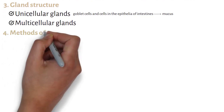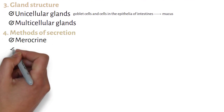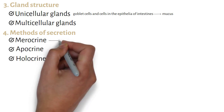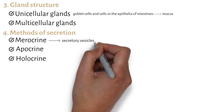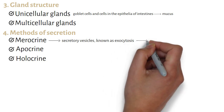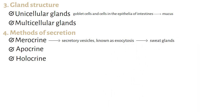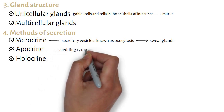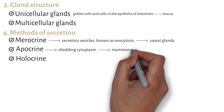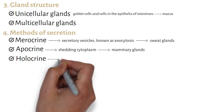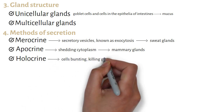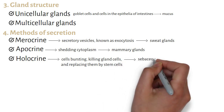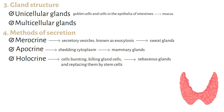There are also different methods of secretion: merocrine, apocrine, and holocrine secretion. Merocrine secretions are released by secretory vesicles via exocytosis, and can be found in tissues like sweat glands. Apocrine secretions are released by shedding cytoplasm, such as the secretions by the mammary glands. Holocrine secretions are released by cells bursting, killing gland cells, and replacing them with stem cells, in tissues like sebaceous glands, which secrete oil onto the skin.